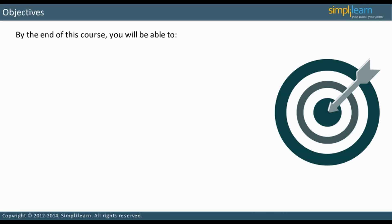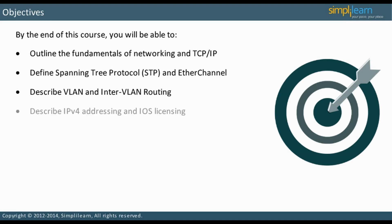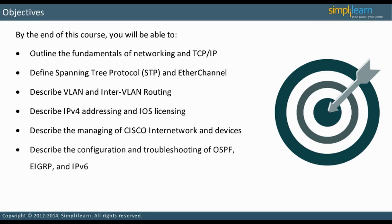By the end of this course, you will be able to outline the fundamentals of networking and TCP/IP, define Spanning Tree Protocol (STP) and EtherChannel, describe VLAN and inter-VLAN routing, describe IPv4 addressing and IOS licensing, describe the managing of Cisco internet network and devices, describe the configuration and troubleshooting of OSPF, EIGRP, and IPv6, and define Wide Area Networks (WAN).